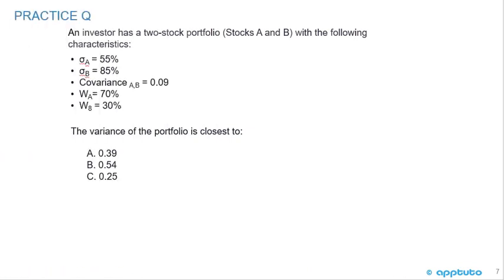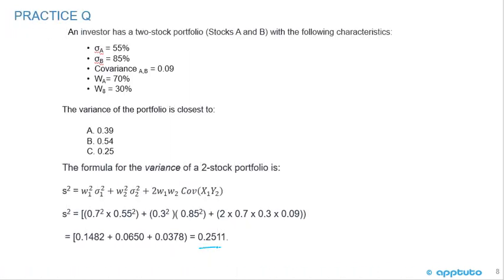Here's a practice question to work through the math. An investor has a two-stock portfolio, stocks A and B, with the following characteristics: standard deviation of stock A 55%, standard deviation of stock B 85%, covariance 0.09, weight in stock A 70%, and weight in stock B 30%. The variance of the portfolio is closest to A: 0.39%, B: 0.54%, or C: 0.25%. The formula for variance of a two-stock portfolio is weight 1 squared times variance 1, plus weight 2 squared times variance 2, plus 2 times weight 1 times weight 2 times the covariance.